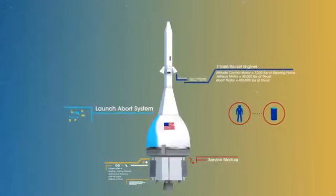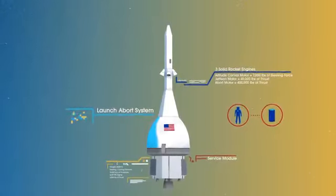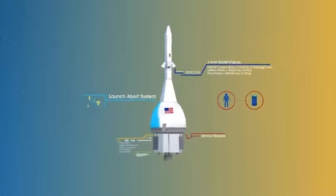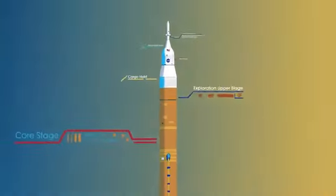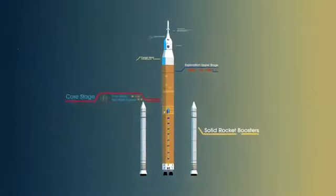To accomplish the task of launching our crew and heavy payloads, NASA is building the Space Launch System, comprising of a cargo hold, an exploration upper stage, a massive core stage, and two extended solid rocket boosters.